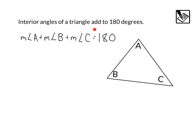The interior angles of a triangle add to 180 degrees. Here we have angle A, B, and C. We can see the measure of angle A, plus the measure of angle B, plus the measure of angle C would equal 180 degrees. We use that little m to represent the measure, and that angle symbol to refer to an angle.